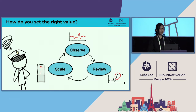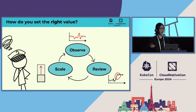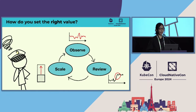So how do we set the right value? The key is to monitor the actual resource consumption, understand the usage pattern, and then adjust the settings to match those observations. Bear in mind, setting requests is not a one-time task. If a new feature is added or your service grows, resource usage may change, so we need to continuously adjust them.